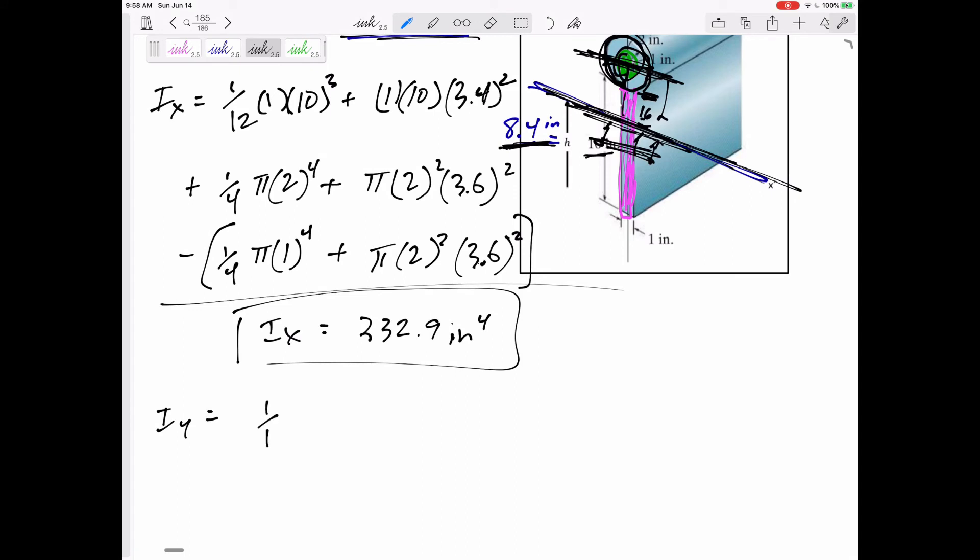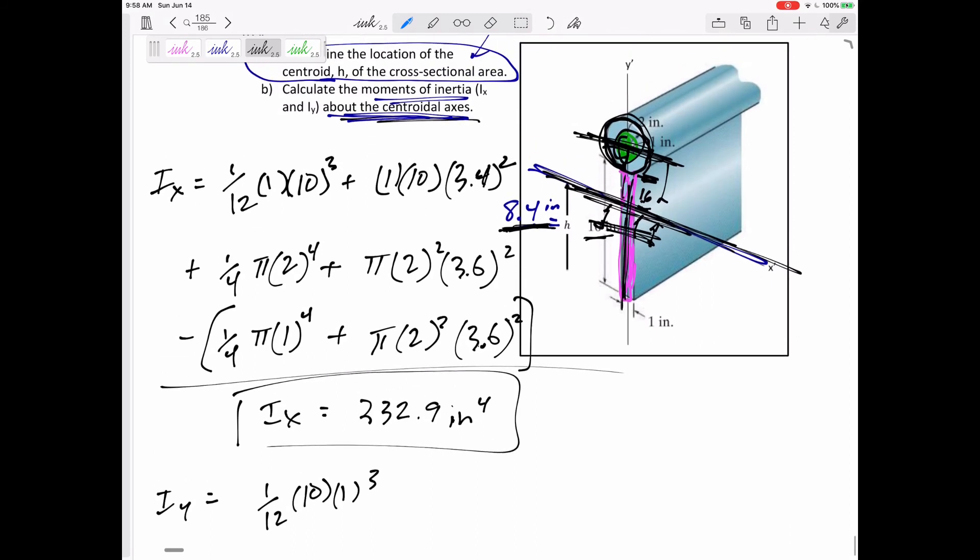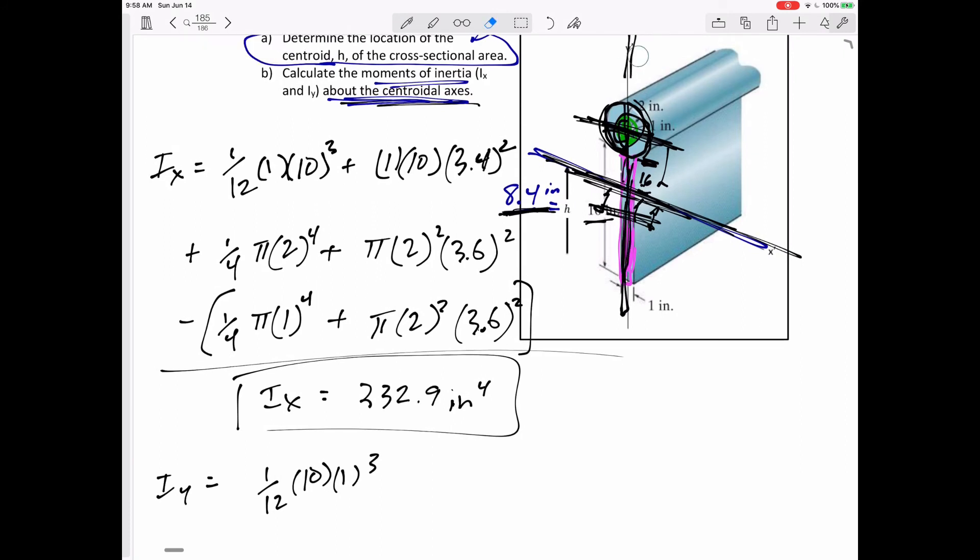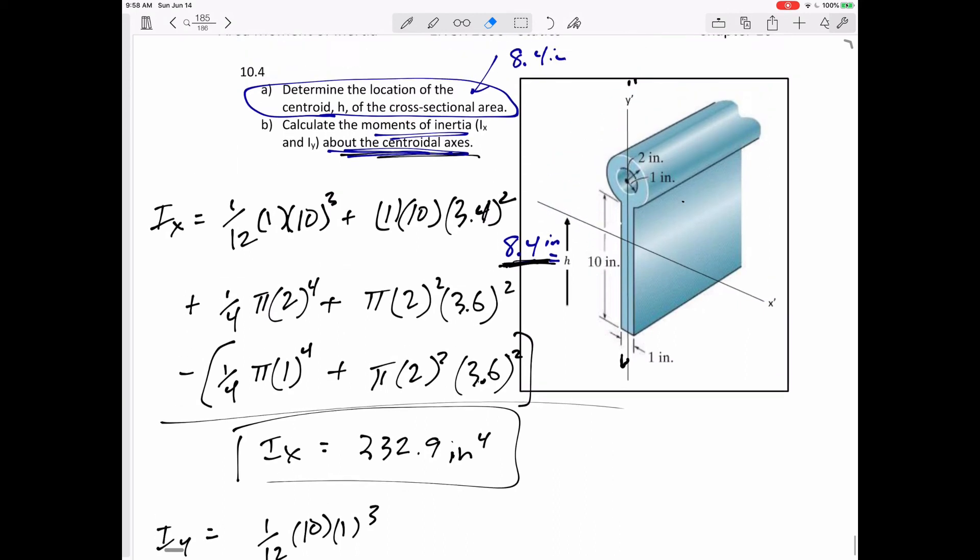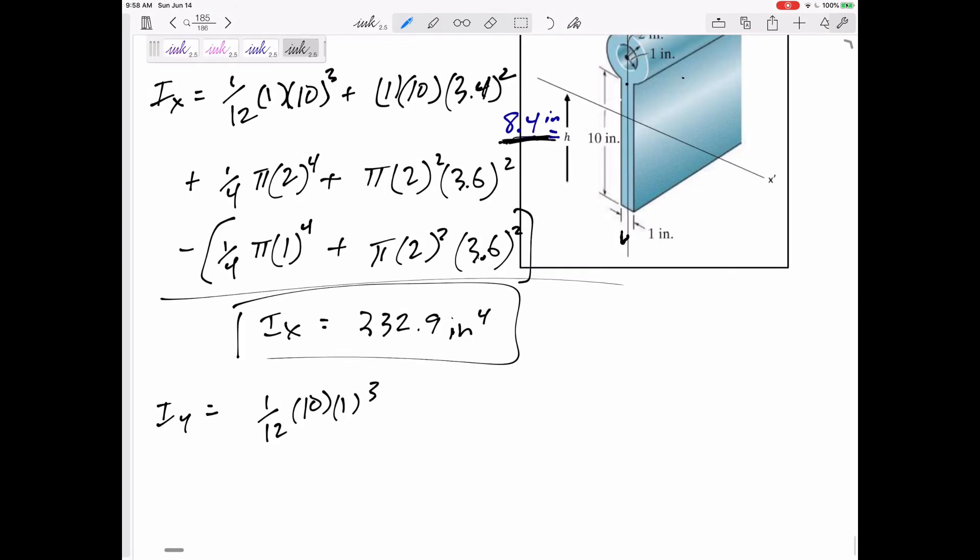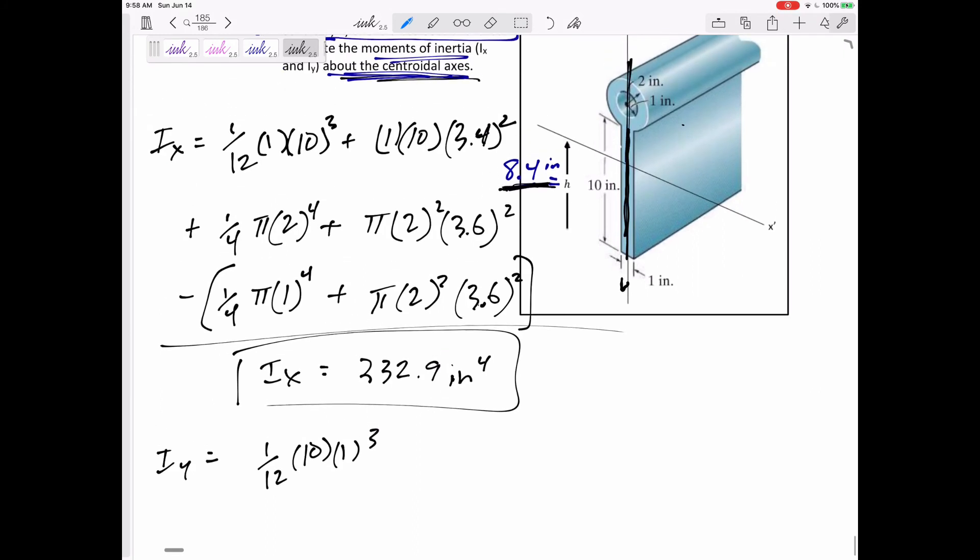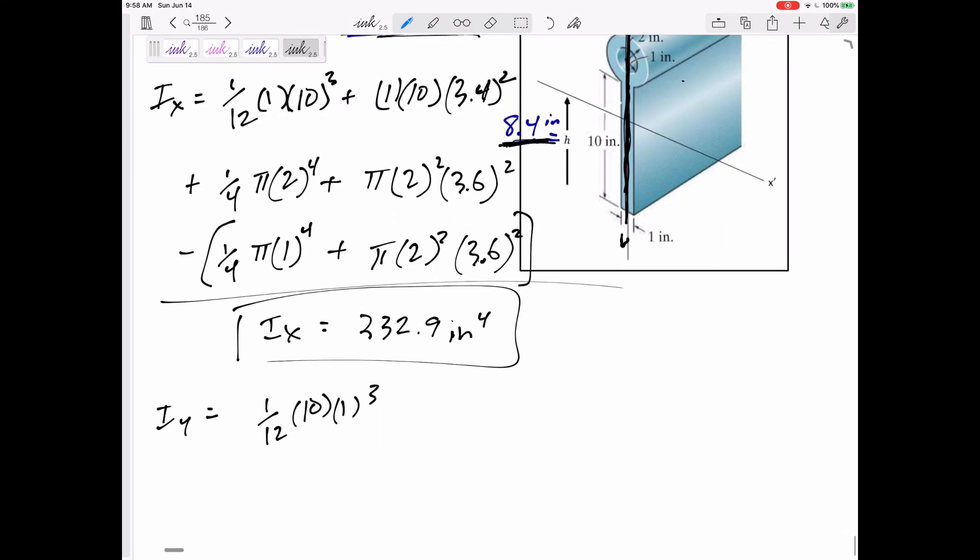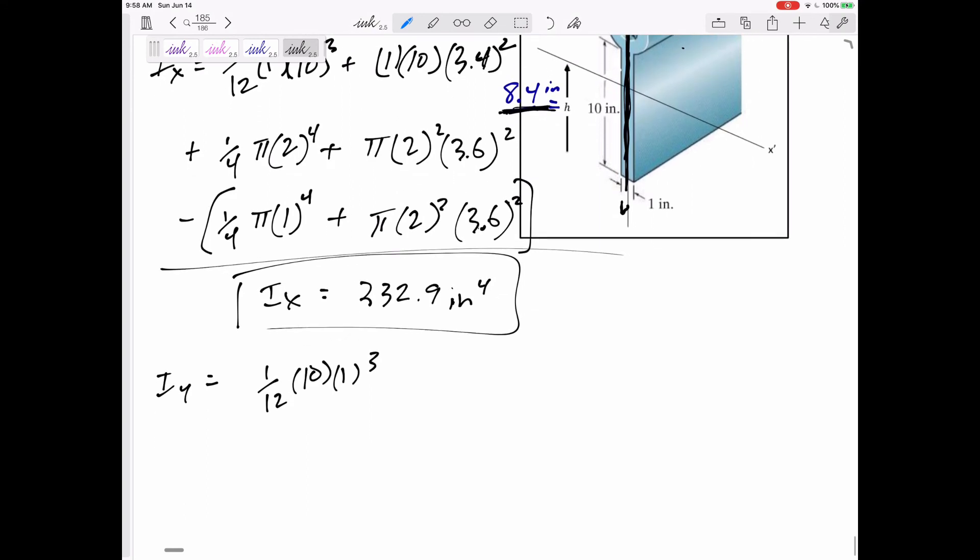The IY of that pink rectangle is 1/12 h b cubed. That's the I about the centroid. I want the I about this, which is still, which is the same axis. I want the I, I don't have to add an AD squared for that one because the I that I was given is about the centroid of that rectangle. The centroid of the composite body is still at the centroid of the rectangle for the Y. So I don't need to add an AD squared. So don't add it if you don't need it.